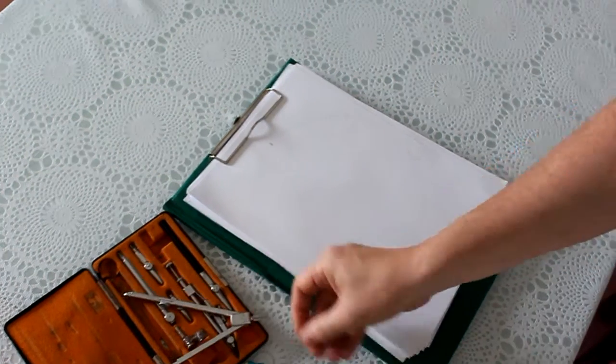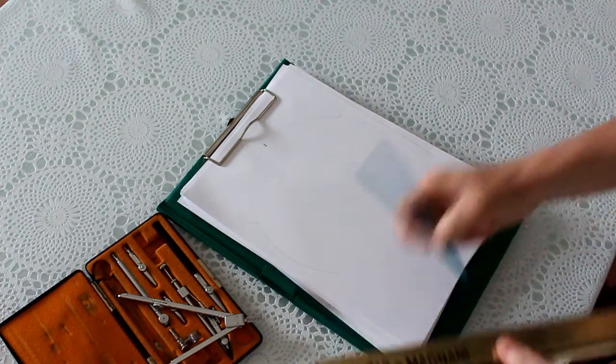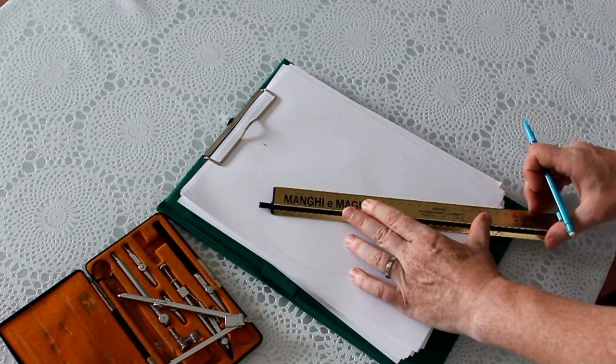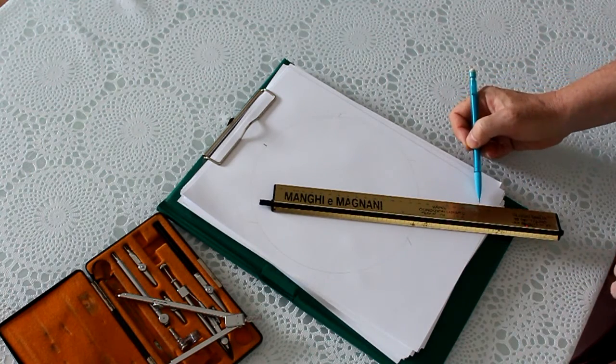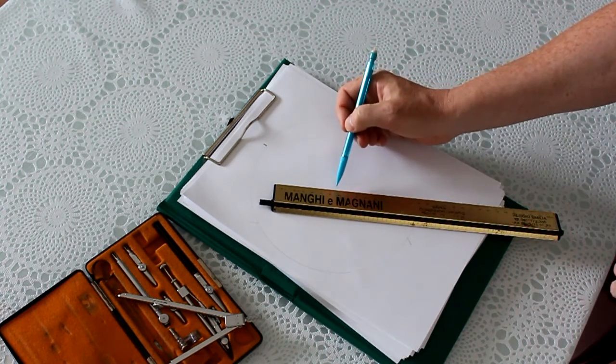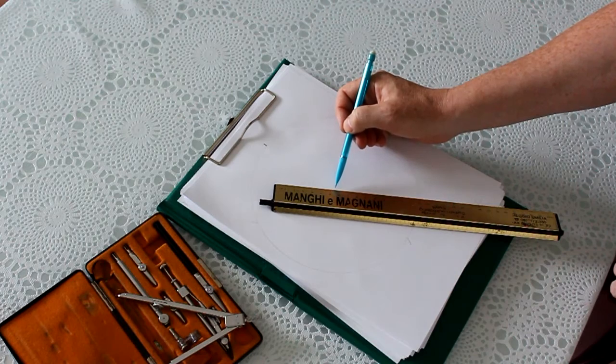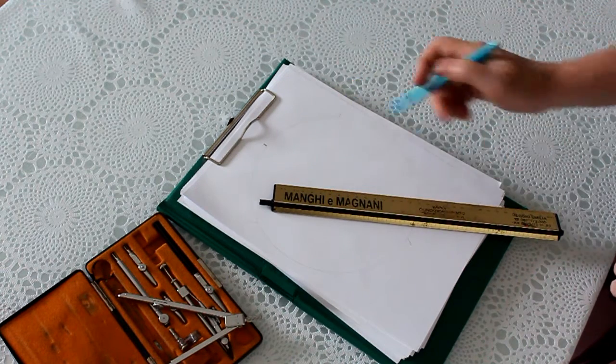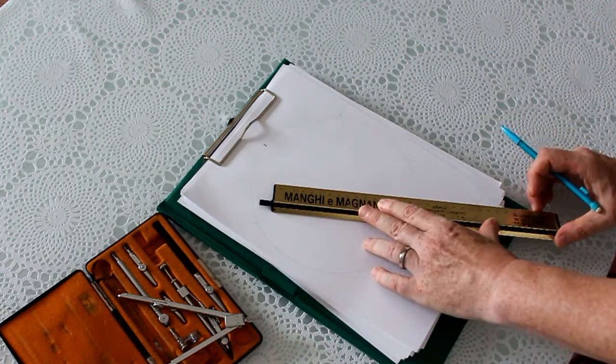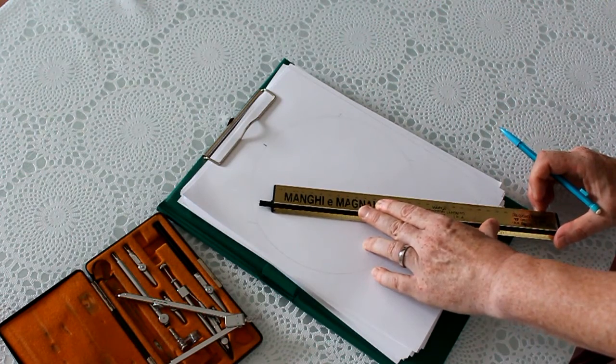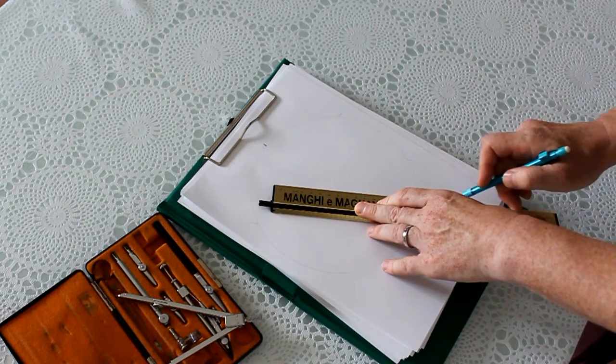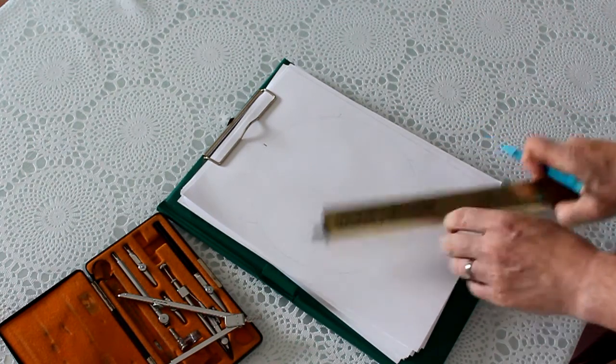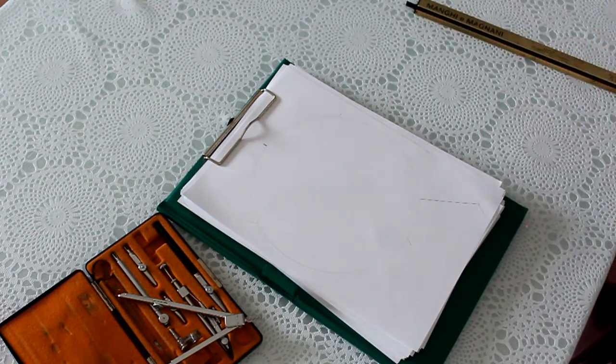Then we're going to take the ruler and our pencil, and we are going to draw a line which goes from the cross here to the exact center of the circle, where the point is of our compasses. We're going to draw a line like this, up to the circle.